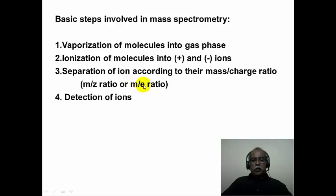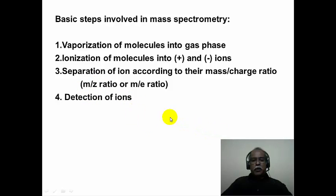In older textbooks you will see m/e; in modern textbooks one sees m/z. Finally, the ions are detected and a current is produced in the detector corresponding to a signal produced in the mass spectrometer.